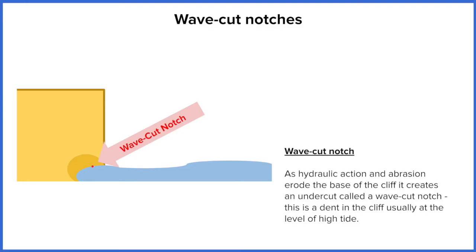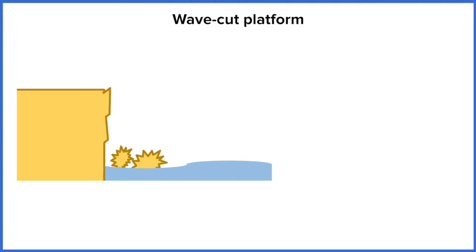So, hydraulic action and abrasion erode the base of the cliff, creating an undercut called a wavecut notch. This is a dent in the cliff usually around the high tide level — and that's important because it's going to lead to the next landform.